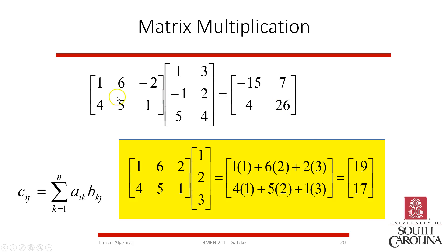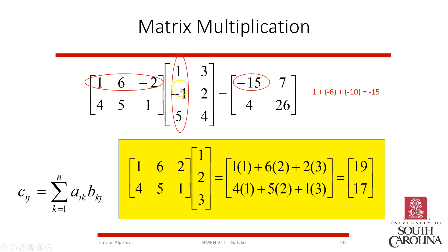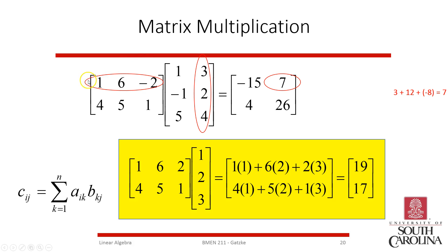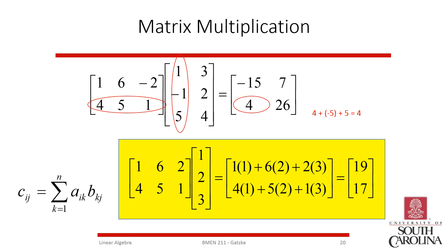Instead, consider a 2-by-3 matrix times a 3-by-2 matrix. We take row one of the first matrix and make a dot product with column one of the second matrix: one times one plus six times negative one plus negative two times five equals negative fifteen. Then row one dotted with column two: one times three plus six times two plus negative two times four gives us seven. Moving down, row two dotted with column one: four times one plus five times negative one plus one times five gives us four. And finally that row with the last column gives twenty-six.